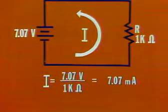At 45 degrees, the instantaneous voltage is 7.07 volts. This can be represented by a 7.07 volt battery, as shown in this circuit. Using Ohm's law, we have 7.07 volts divided by 1,000 ohms, or 7.07 milliamps of current flow.